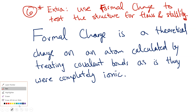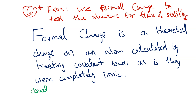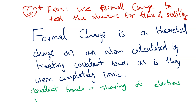Is anyone struggling with the difference between ionic bonds and covalent bonds? They are very distinctly different entities. Remember that covalent bonds mean sharing of electrons, and a truly ionic bond means full transfer of electrons.